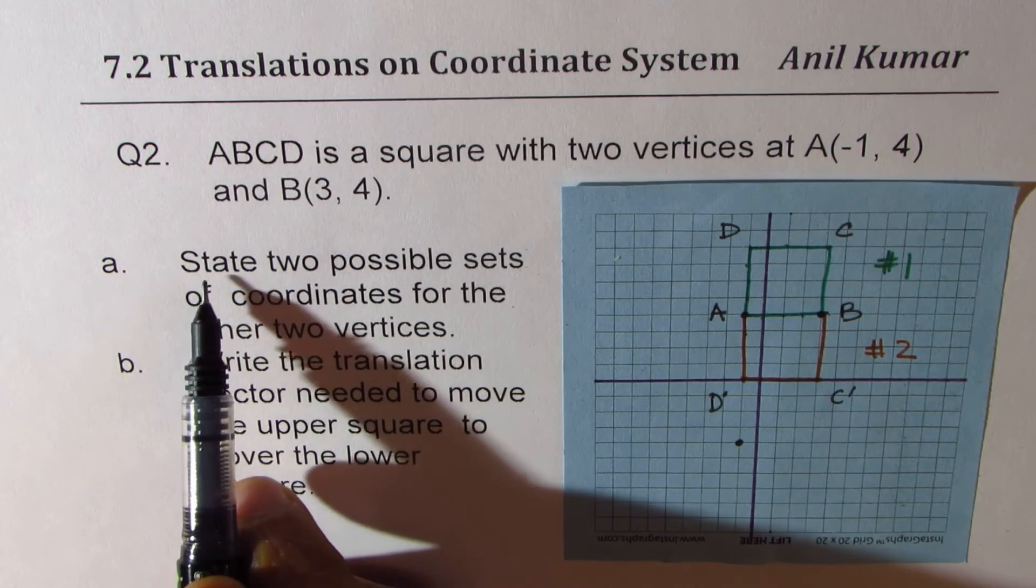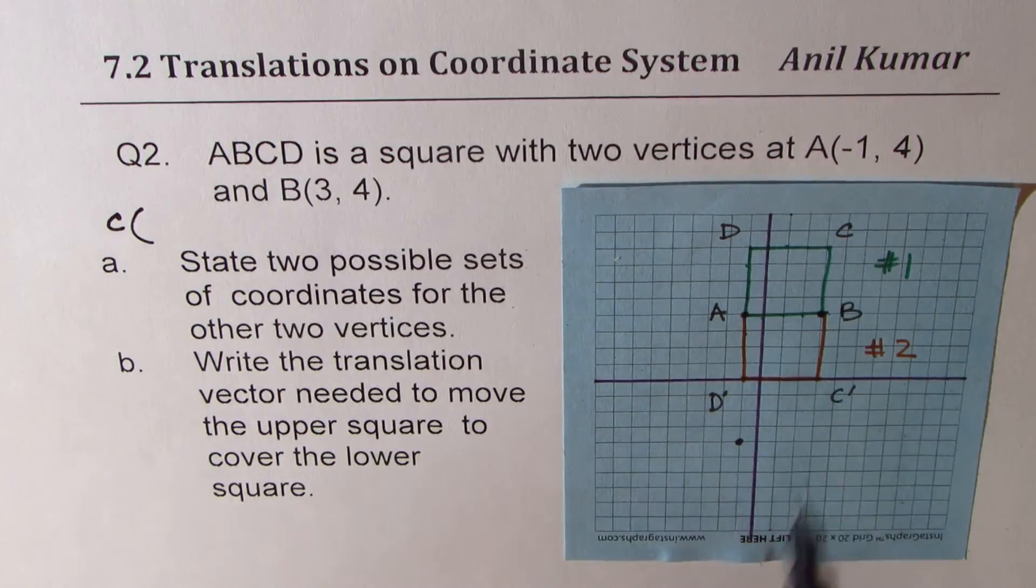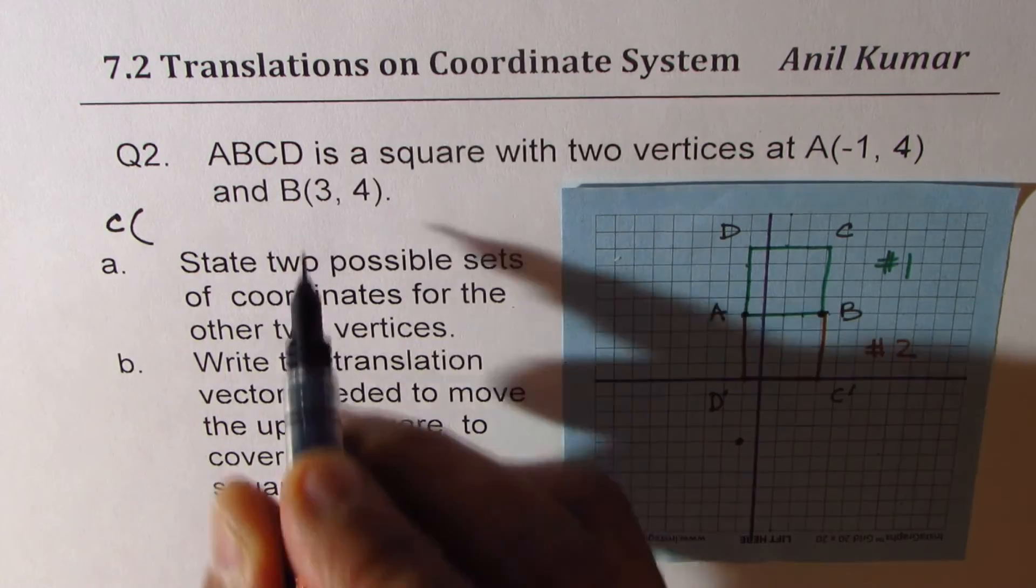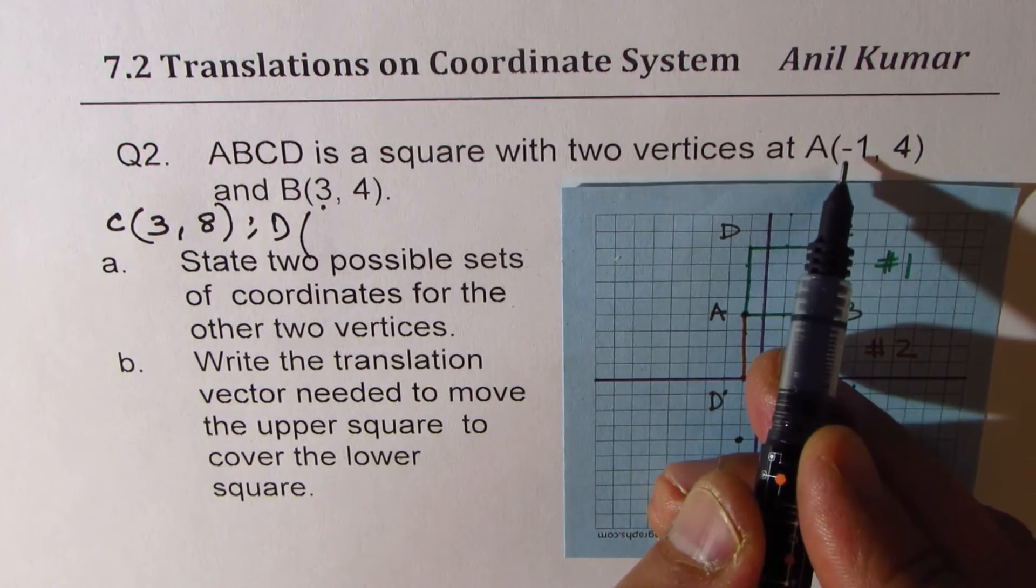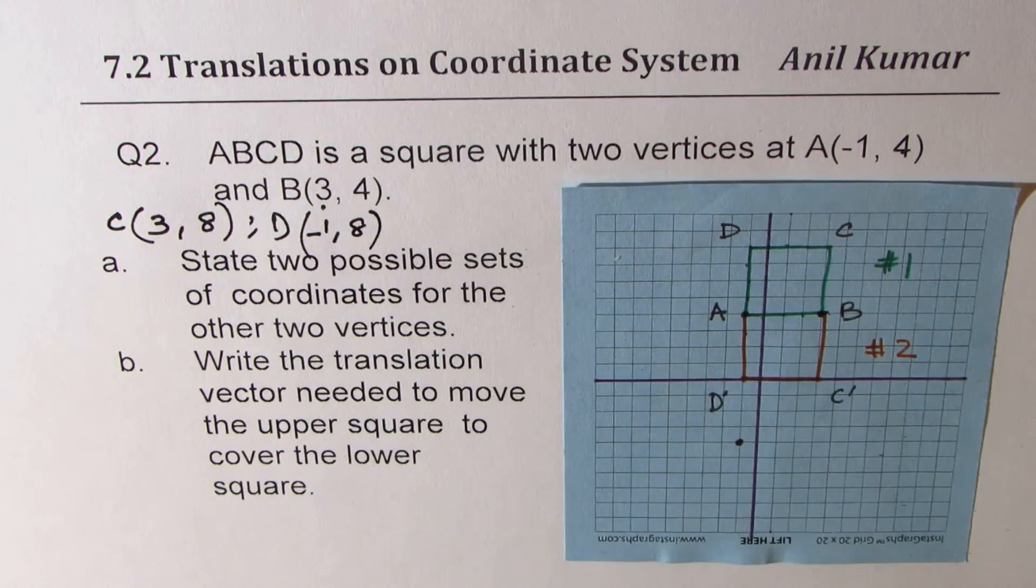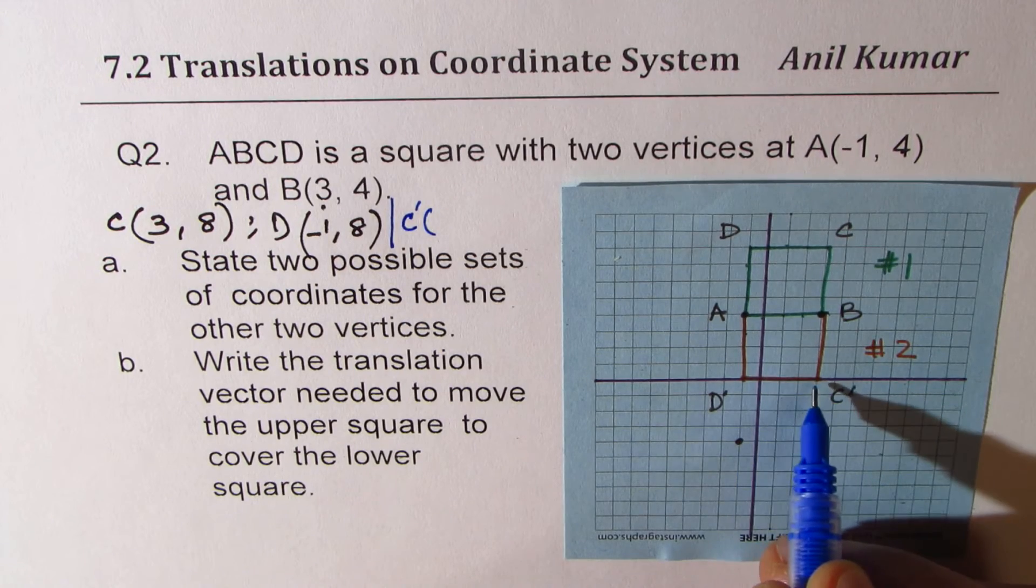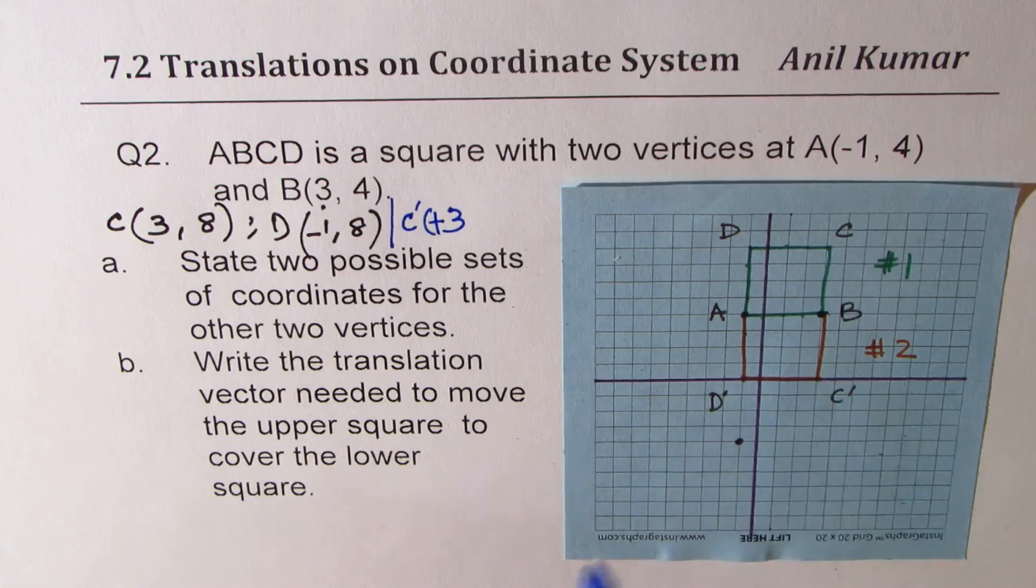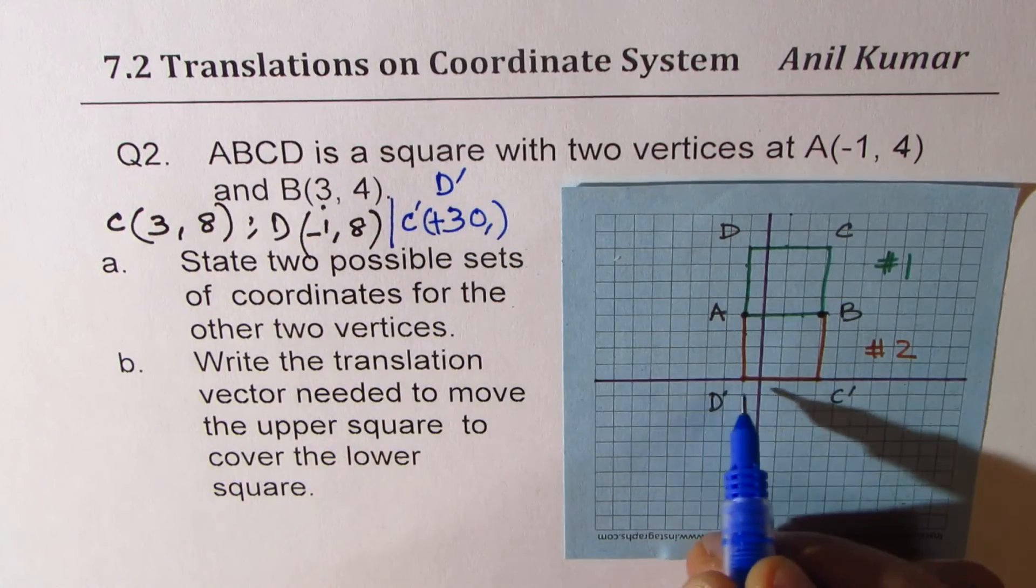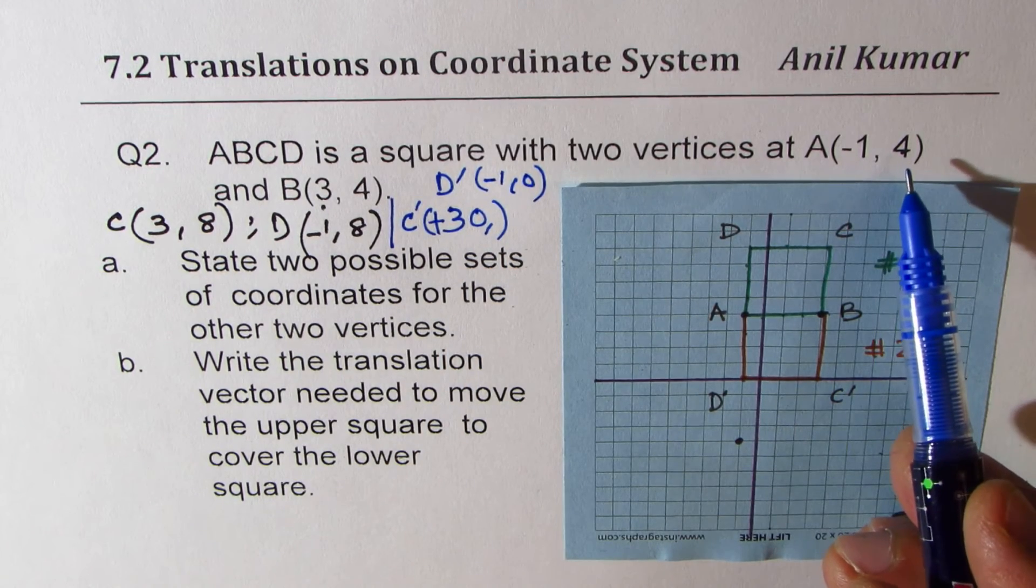So these are two different squares which can be formed with given points A and B. Now, let us state two possible sets of coordinates for the other two vertices. So the coordinates are, it could be C, which is now at (3, 8), right? So four plus four, (3, 8). And it could be D, which is at (-1, 8). So that is one set. The other set will be the one which we have shown with D' and C'. So that is one set. And the other is with C', which is at three and zero, and D' as (-1, 0). So the X values will remain same.